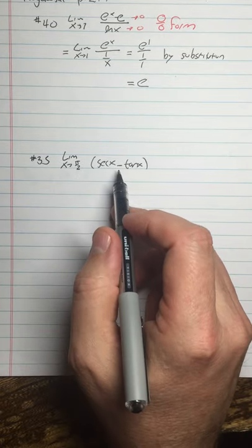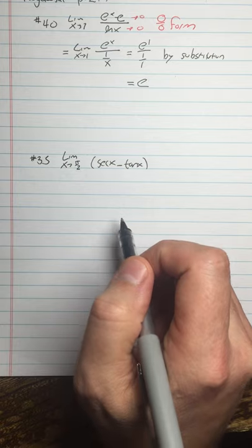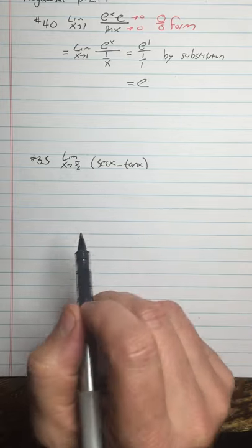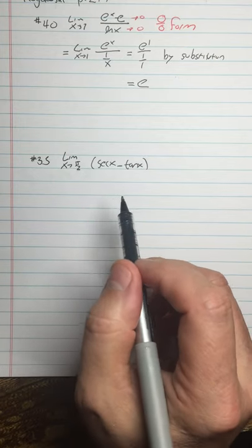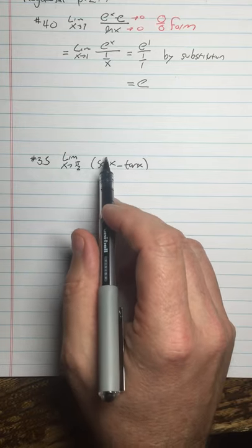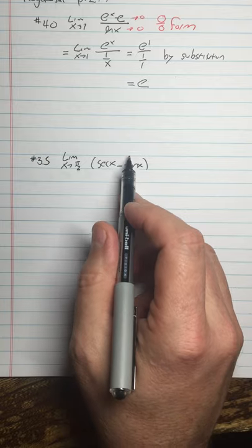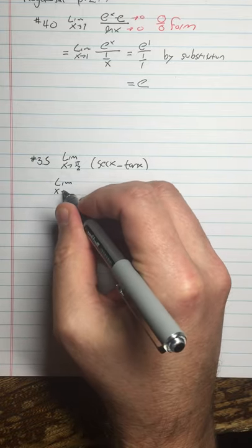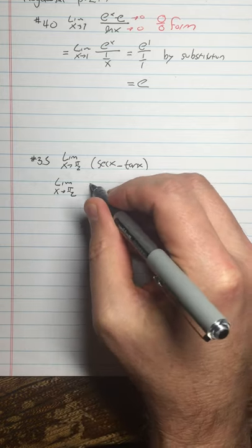This one, how can that be a 0 over 0 form? It's not even a quotient. So what you want to look for, if you suspect L'Hôpital could help you, and in this case it can, look for hidden quotients. Secant is 1 over cosine. Tangent is sine over cosine. See, those are both quotients, and I bet I could combine them using a common denominator to get a single quotient.